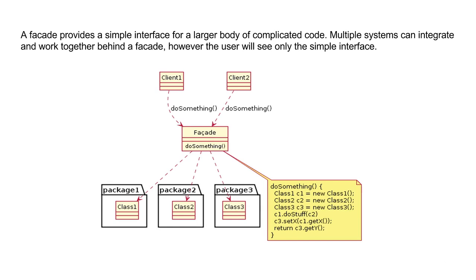Here we have a number of clients — client one and client two — each of which interacts with the facade. The facade in turn interacts with several systems behind the scenes: three packages. It gathers the information the client needs, pulls it all together, and does something for the client. All of these intricacies are hidden from the clients. There is a larger body of complicated code behind the facade than what the client can see.